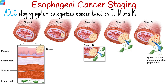Esophageal cancer staging using the American Joint Committee on Cancer Staging System is a standardized method for classifying the extent of esophageal cancer within a patient's body. It categorizes cancer based on the characteristics of the primary tumor, involvement of nearby lymph nodes, and presence of distant metastases.